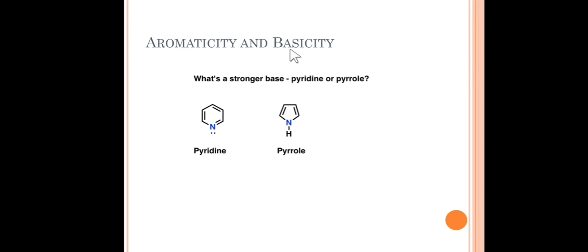As you know, when we compare pyridine and pyrrole to determine which one is the strongest base, it depends on the availability of the lone pair — or its ability to donate the lone pair. Both pyridine and pyrrole have a lone pair on nitrogen, but let's see which one is more easily available. In pyridine, the lone pair on nitrogen is not part of the aromatic character.